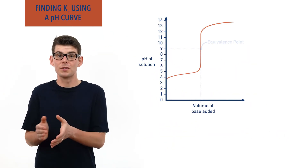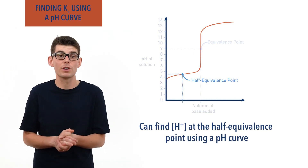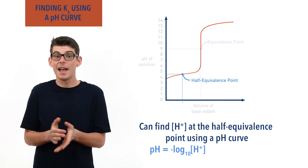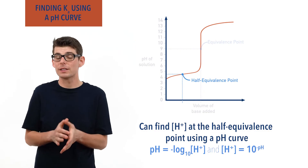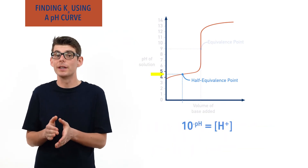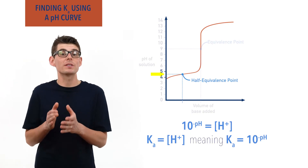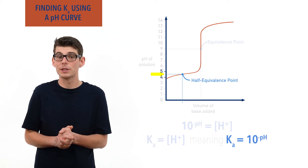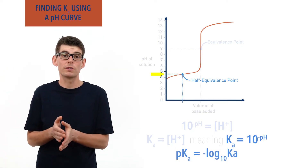Luckily for us, a pH curve shows us the pH of the solution during the titration, meaning we can use the pH of the solution at the half equivalence point to find the concentration of H+ ions present. Remember, pH equals minus log to the base 10 of the concentration of H+ ions, and concentration of H+ ions equals 10 to the power minus pH. Using the pH of the solution at the half equivalence point, 10 to the power minus pH will be the concentration of H+ ions, which equals the Ka value for the weak acid. If you are ever asked for the pKa, all you need to do is calculate minus log to the base 10 of Ka, as pKa equals minus log to the base 10 Ka.